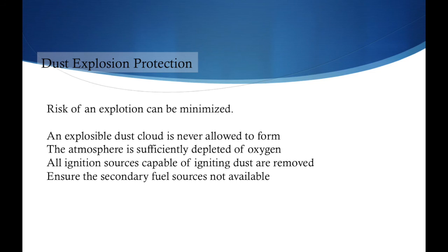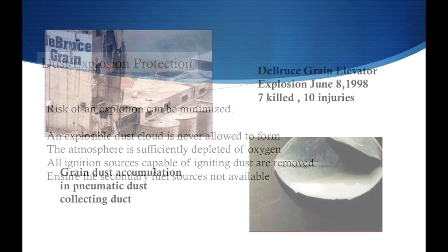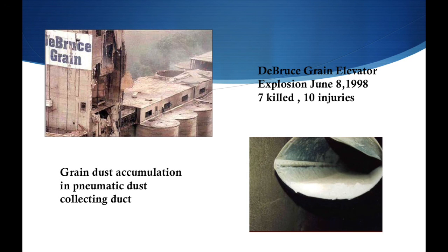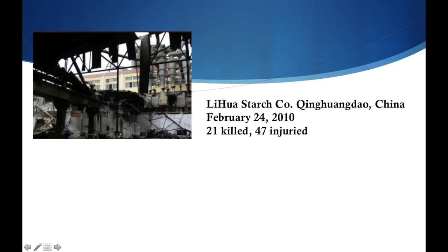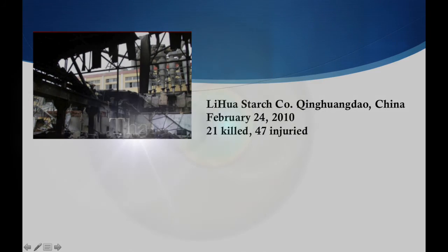We can minimize the risk of a dust explosion. Some ways to do this include: ensuring an explosive dust cloud is never allowed to form, depleting the atmosphere of oxygen substantially, removing all ignition sources capable of igniting dust, and ensuring secondary fuel sources are not available. Examples of dust explosions include one at a grain elevator in June 8, 1998, and another in February 2010 in China. Thank you for watching our presentation — we hope you understand more about the spray dryer.